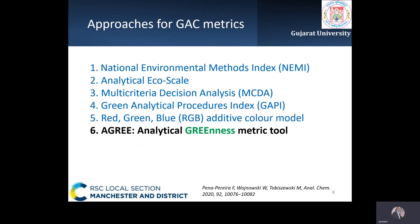Currently several approaches to green analytical chemistry metrics have been developed, each with their own advantages and limitations based on the canons of green chemistry principles. The National Environmental Methods Index is a metric system based on a simple pictogram divided into four parts reflecting criteria such as generation of waste, reagents that are persistent, bioaccumulative, toxic, hazardous, and corrosive. The Analytical Eco-scale is a novel comprehensive approach based on assigning penalty points to parameters not in agreement with ideal green analysis.